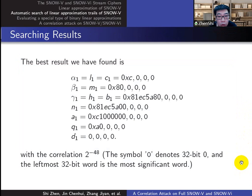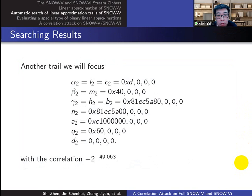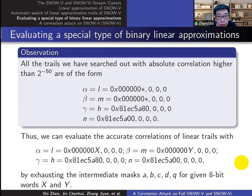And the best trail we've found is this one. While we also focus on another trail with a smaller absolute correlation. In fact, the trails we've searched out have part-of-masks in common, and we can get the accurate correlation of these types of approximations by exhausting the intermediate masks.